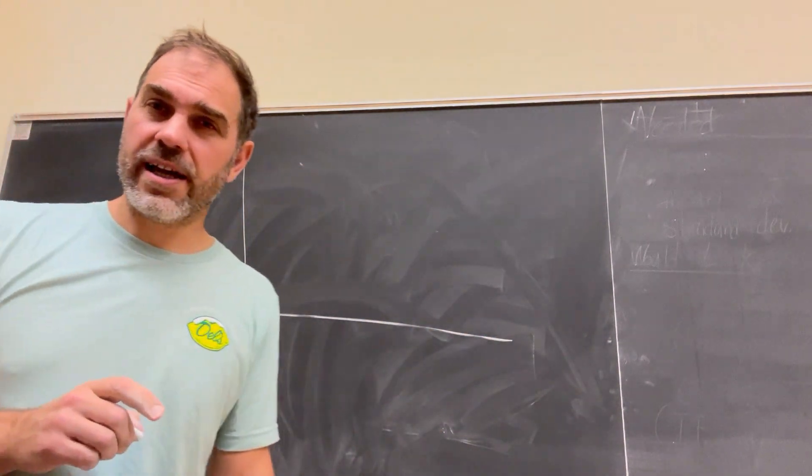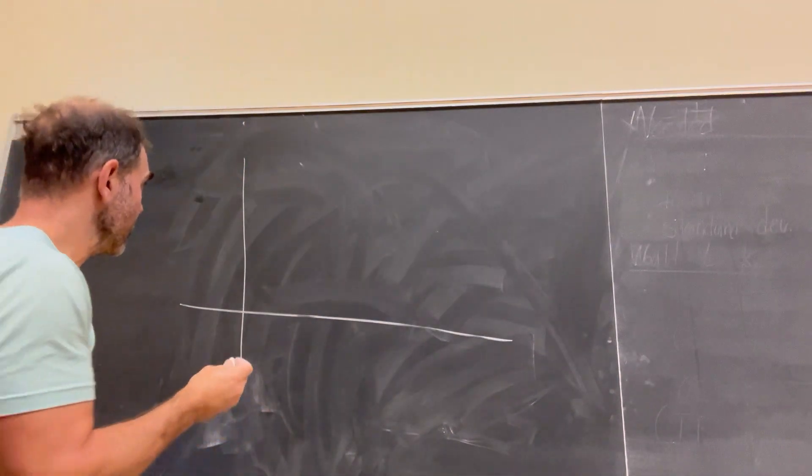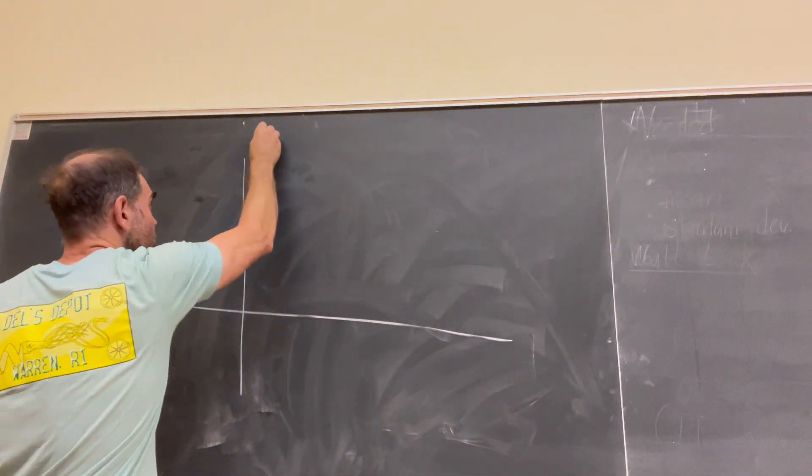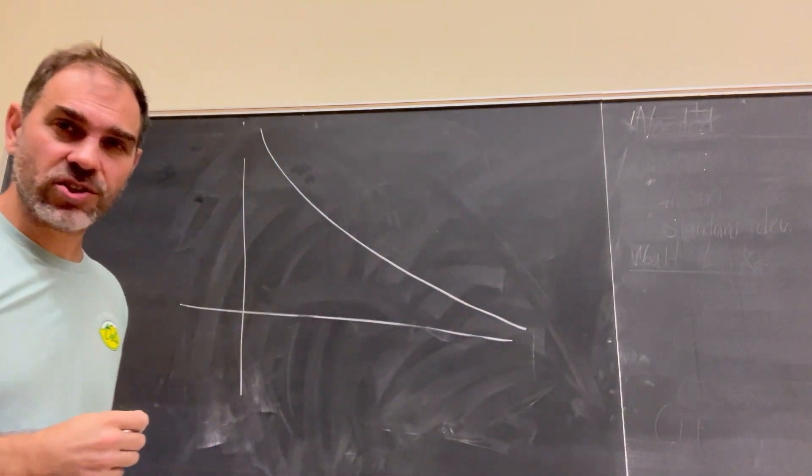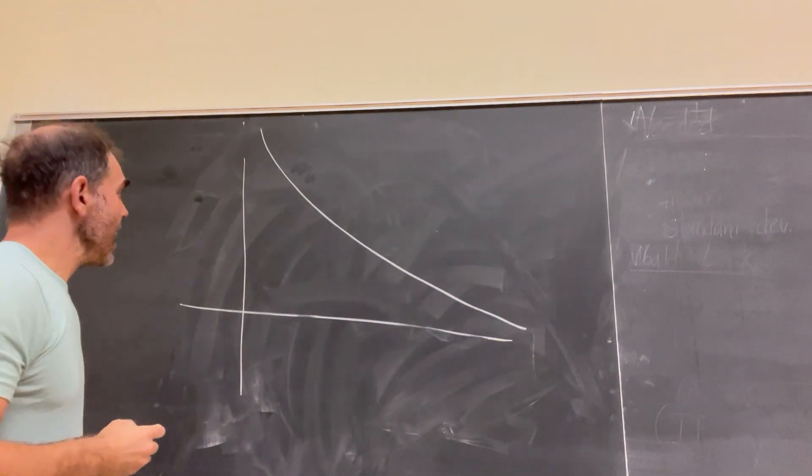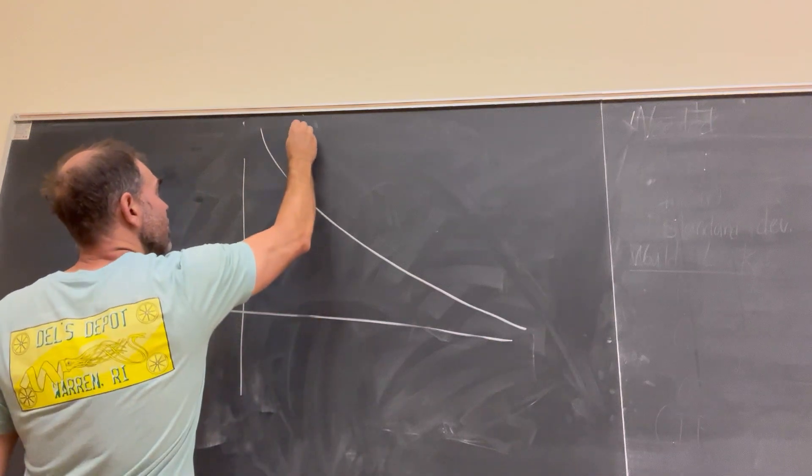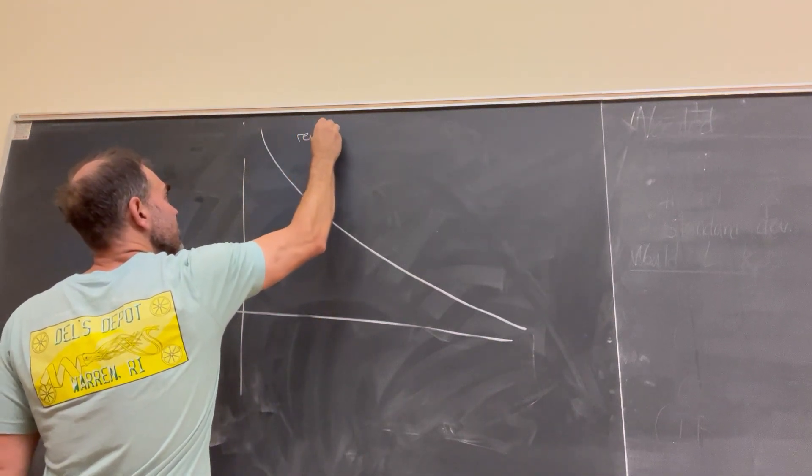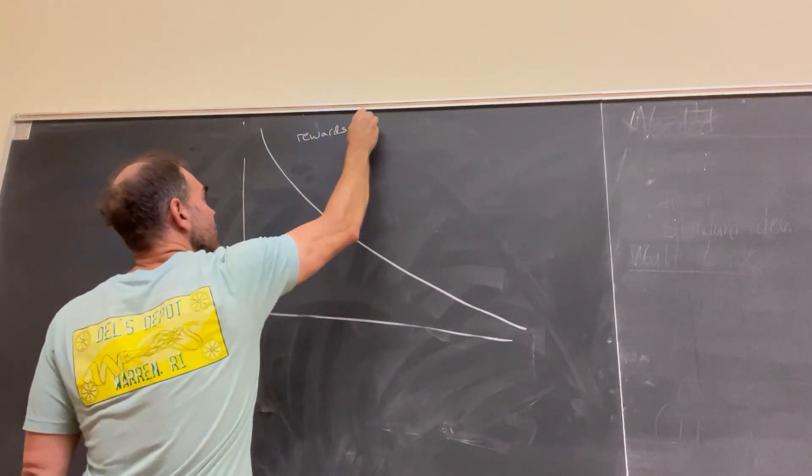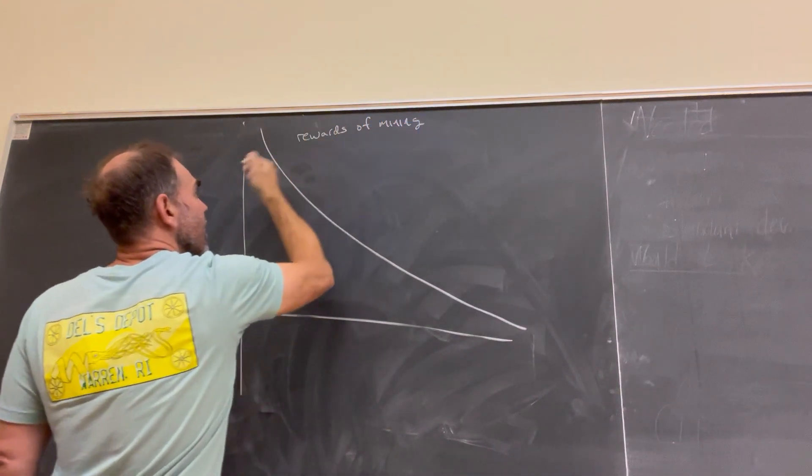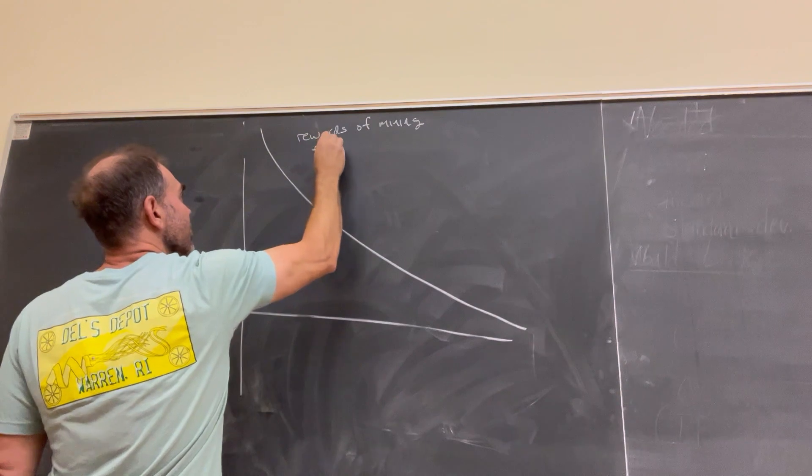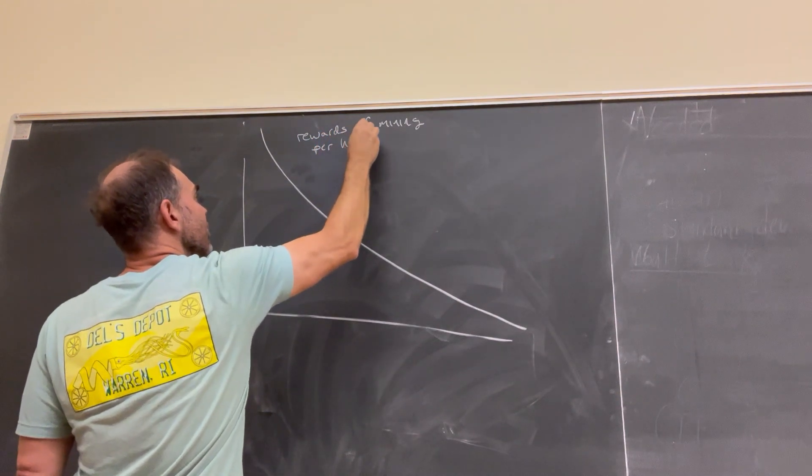So first of all, I'll draw a curve, which I think you should be somewhat intuitively familiar with if you're familiar with how Bitcoin works. This is a one over X curve. And this is going to represent the rewards of mining per hash rate. We can do it as a rate.